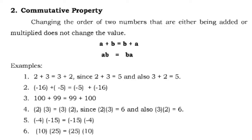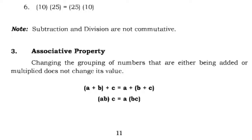Another example: negative 16 plus negative 5 is the same as negative 5 plus negative 16, since both equal negative 21. Then 100 plus 99 is just equal to 99 plus 100. And 2 times 3 equals 3 times 2, since both equal 6. Note: subtraction and division are not commutative. This commutative property only applies to addition and multiplication.